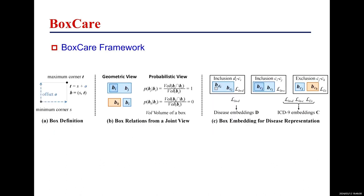We find that a box is an axis-aligned hyper-rectangle with geometric properties, and two boxes can clearly include or exclude each other. So, in this work, we propose to leverage box embedding for disease representation and diagnosis prediction in healthcare data, which is named BoxCare. For details of the model design, please refer to our paper.